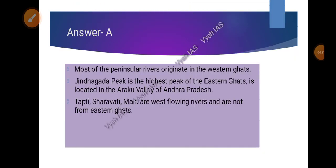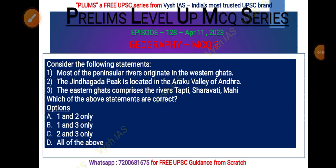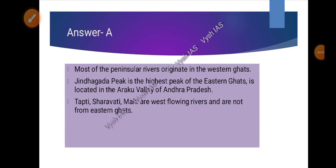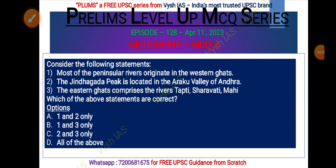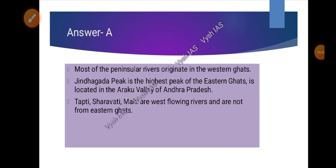The answer is A — one and two only. Most peninsular rivers originate in the Western Ghats. The Jindhagada peak is located in the Eastern Ghats and is its highest peak — that's why it's included here. Tapti, Shravati, and Mahi are west-flowing rivers and are not part of the Eastern Ghats, so statement three is incorrect.